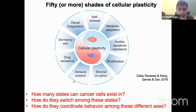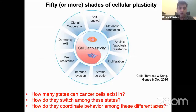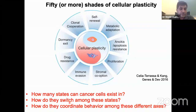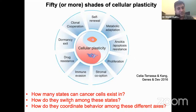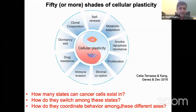Plasticity — the ability to switch and adapt — has been reported along multiple axes needed during metastasis. The kinds of questions we are looking into: how many states can cancer cells exist in? How do they switch? Can we accurately predict when a cancer cell is going to switch? How are cancer cells able to coordinate all these different challenges thrown at them during the entire metastatic cascade?